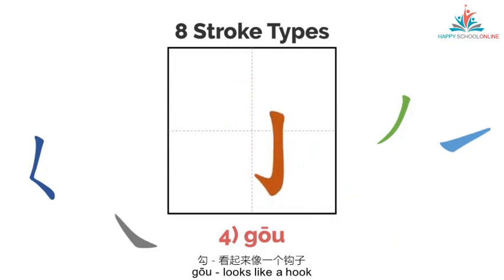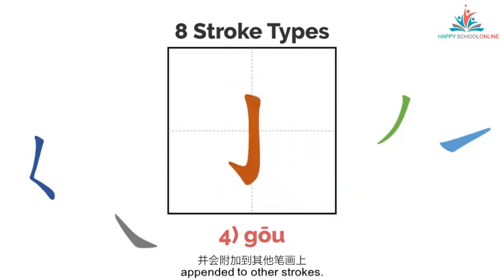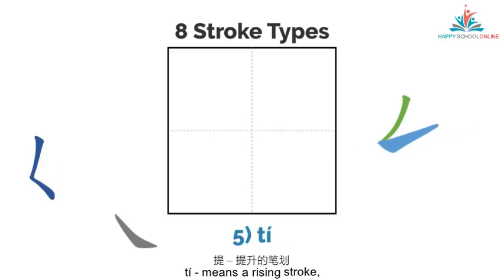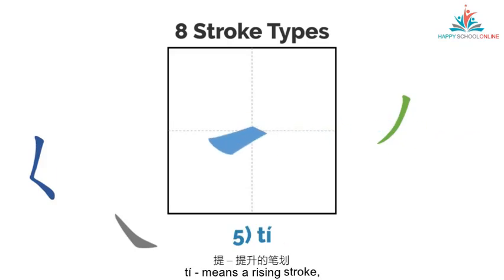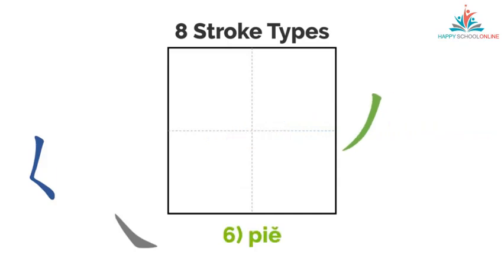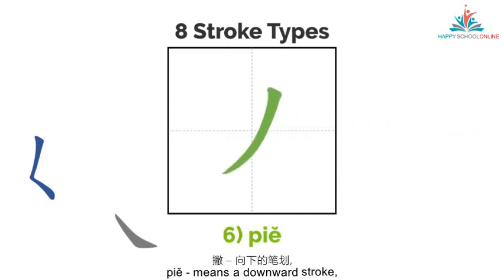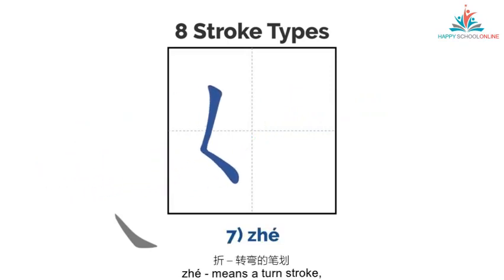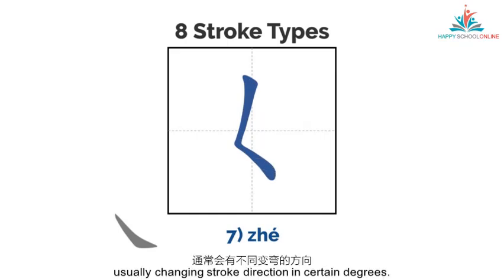Fourth, 钢 looks like a hook, appended to other strokes. Fifth, 斜 means a rising stroke, rising from left to right. Sixth, 斜 means a downward stroke, falling from right to left. Seventh, 折 means a turn stroke, usually changing stroke direction in certain degrees.